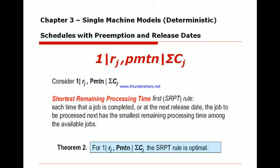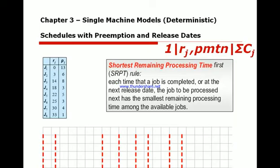The schedule is preemption with release dates — Shortest Remaining Processing Time (SRPT). Each time a job is completed or a new release date occurs, the job to be processed next is the one with the smallest remaining processing time among the available jobs. Let's see what that means clearly.